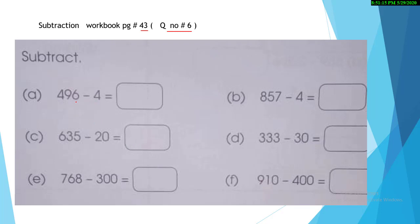There is only one digit here at the ones place. 6 minus 4 — what will be the answer? It's 2. I'll mention the 2, and the rest of the numbers come as they are. Now the next one: 7 minus 4 — what will be the answer? 3. Yes, and the rest of the numbers come as they are — that is 5 and 8. You can also do it by counting back, but counting back is difficult when you subtract something like 635 minus 20 — it's difficult to take 20 steps backward.